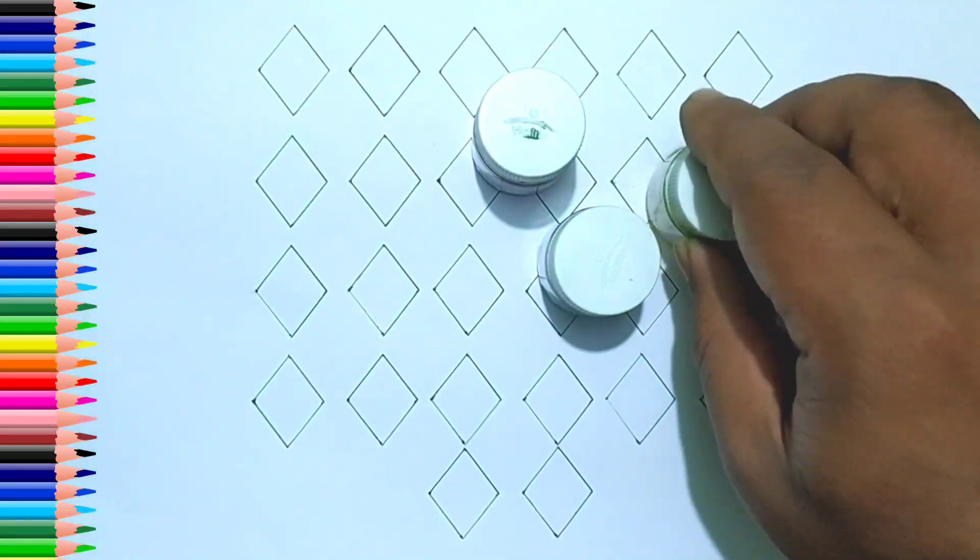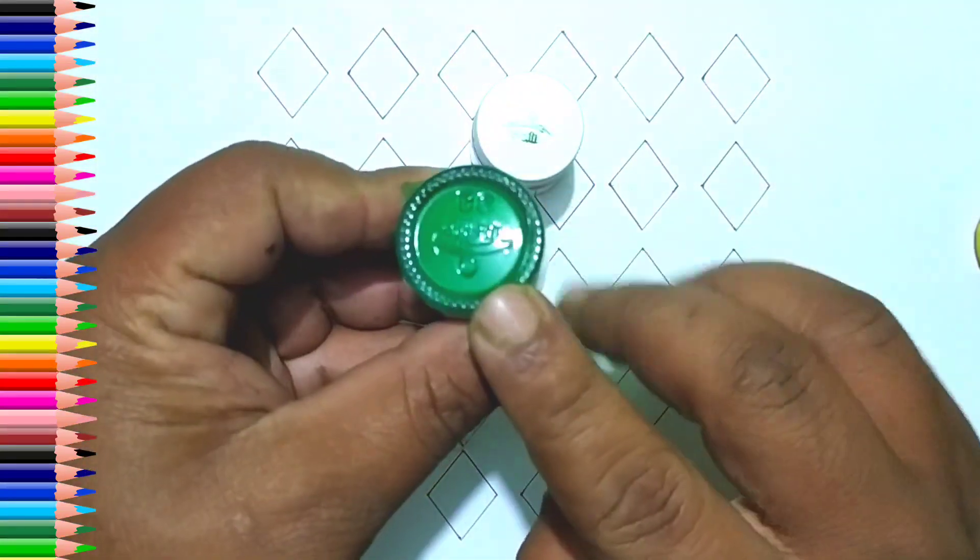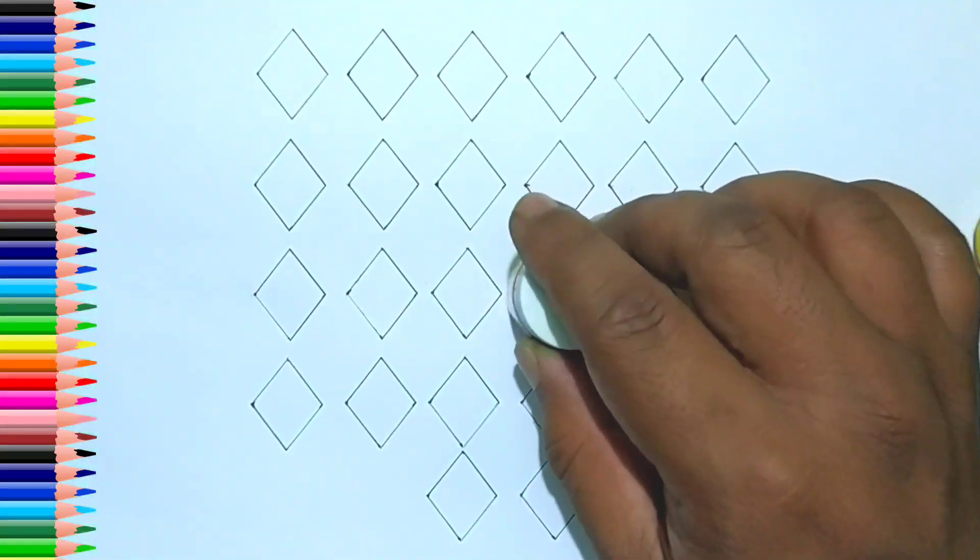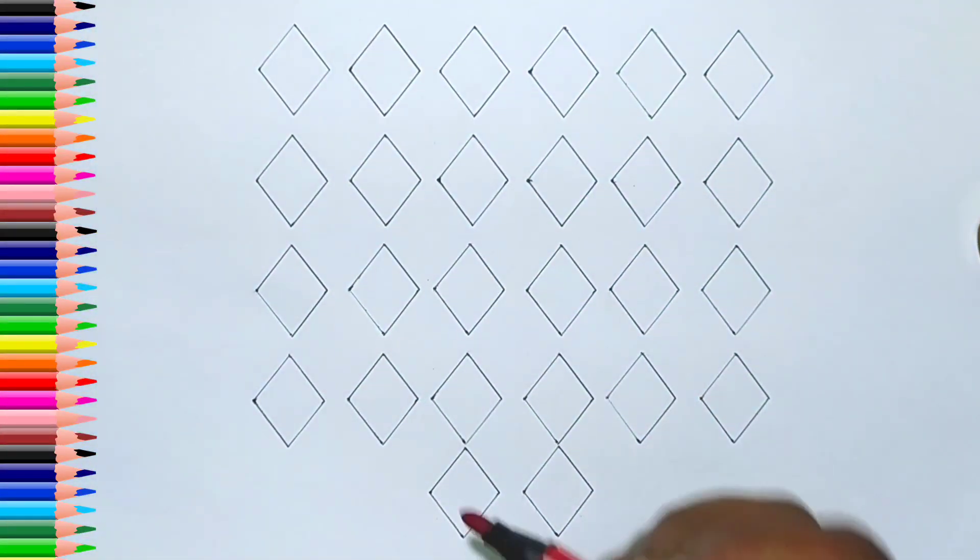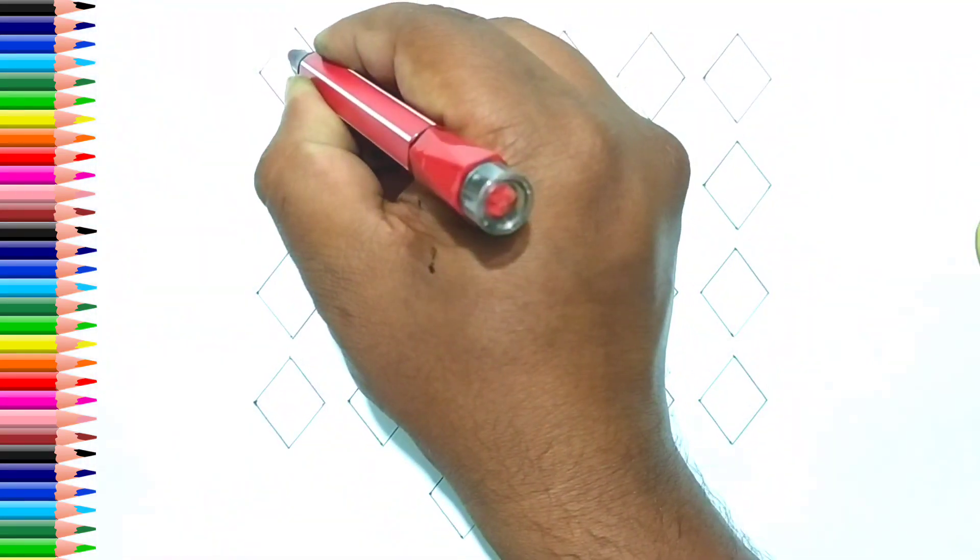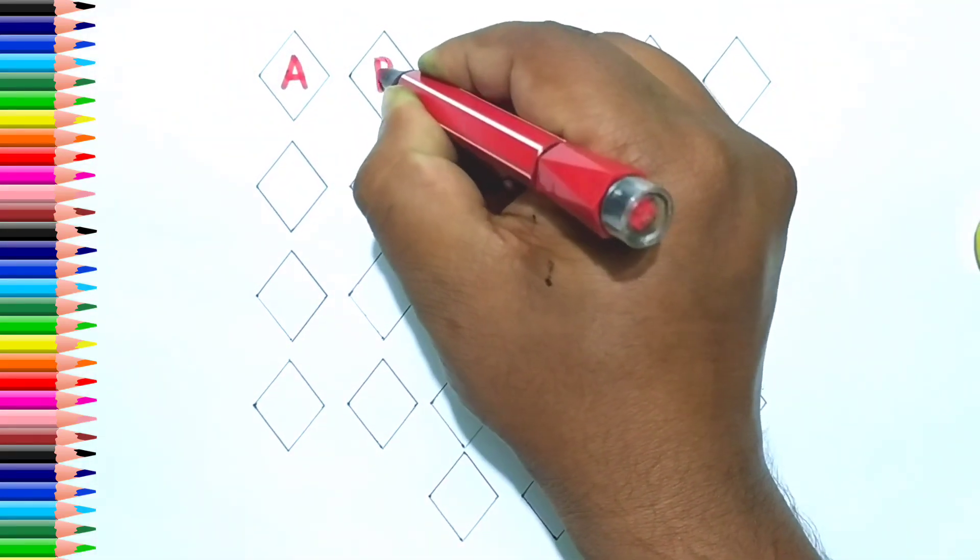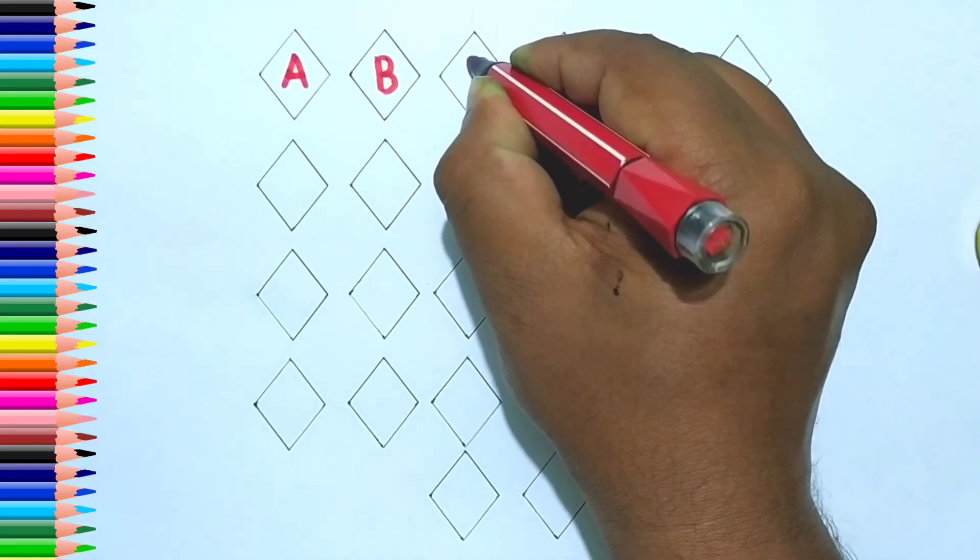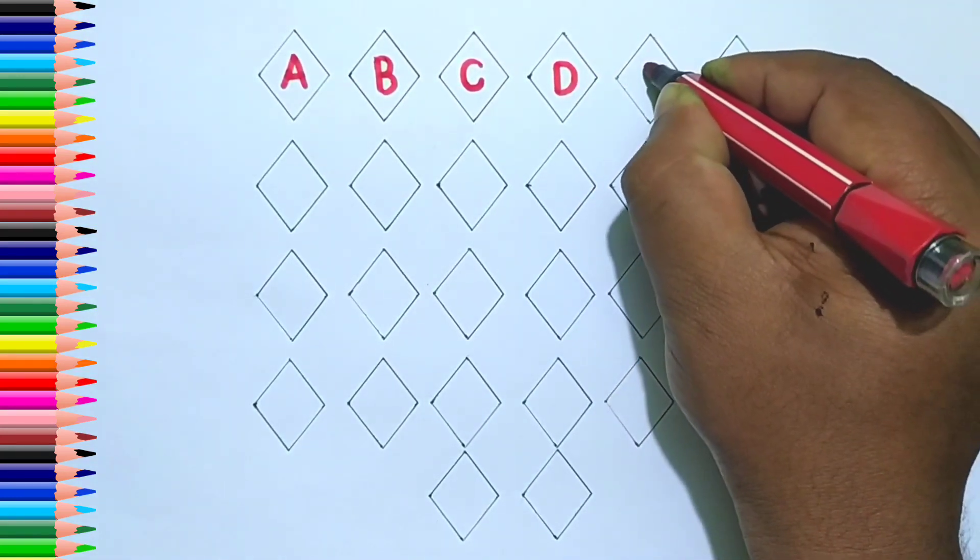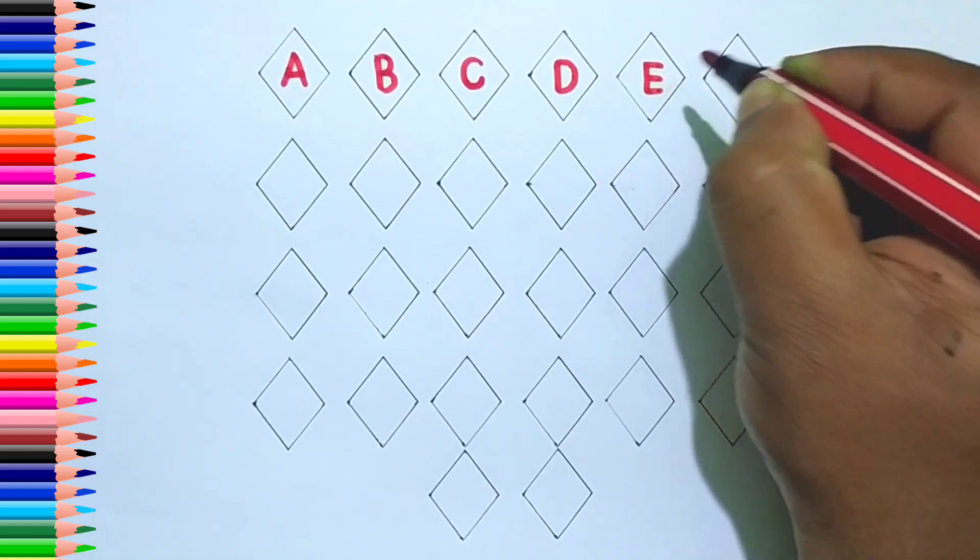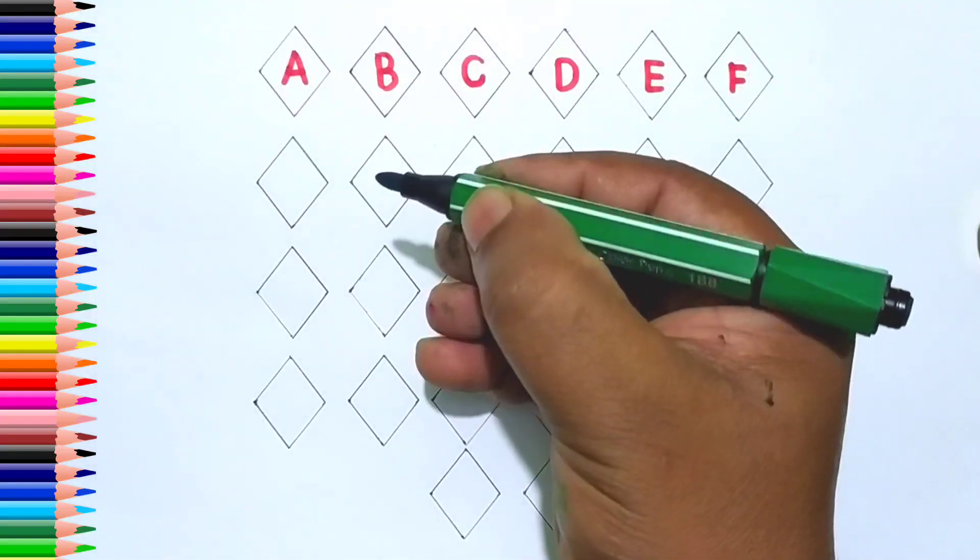White color, yellow color, green color, red color. A for apple, B for ball, C for cat, D for doll, E for elephant, F for fruit. Green color.